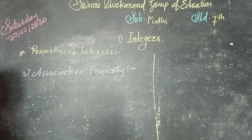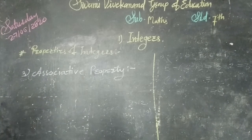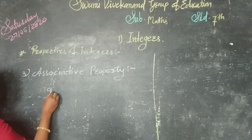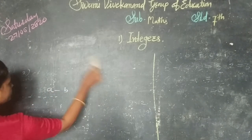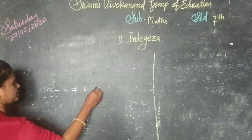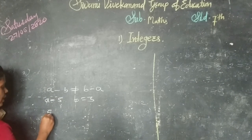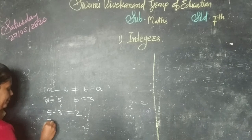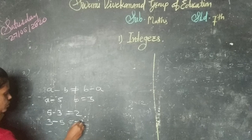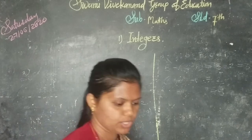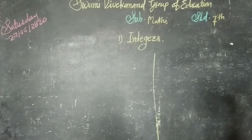If A, B and C are three integers, then the associative property can be mentioned as: A minus B is not equal to B minus A. With an example, suppose A is 5 and B is 3, then 5 minus 3 equals 2. Whereas B minus A gives minus 2. So again, the closure property holds under subtraction for integers, whereas the associative and commutative properties are not true for the subtraction of integers.